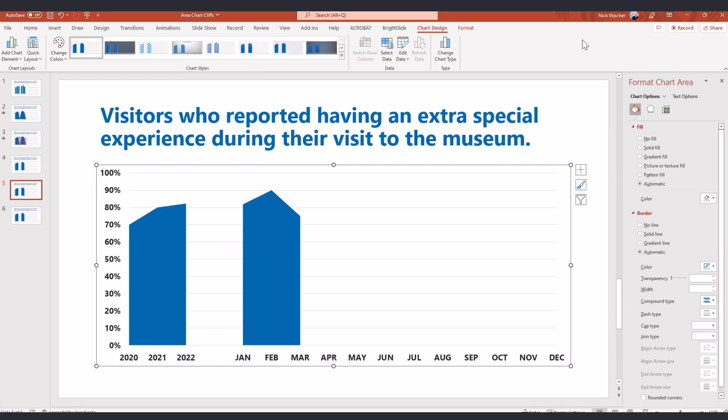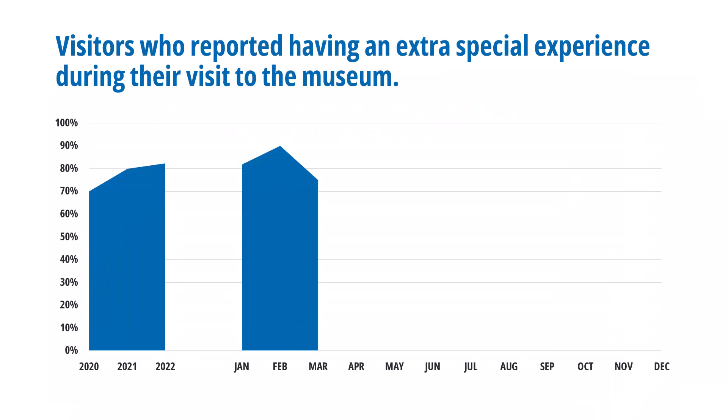Doesn't that look great? This is a really great trick to use if you are reporting data monthly or quarterly — some other time interval where you want to show people that you're going to have that data in the future but just don't have it today, and you're going to update it as time goes on. I hope you like this video. Subscribe to my channel, click the subscribe button, and hit the bell next to the subscribe button to get notifications. I hope you have a great day and I will see you next time.